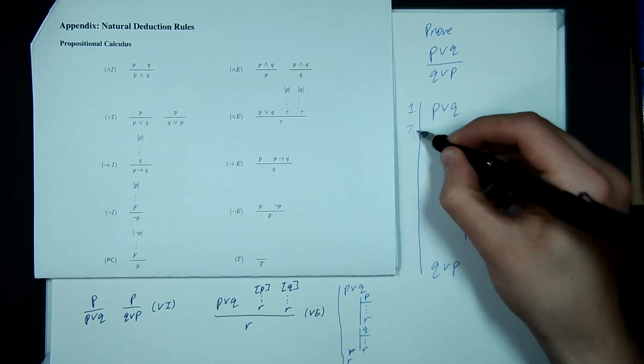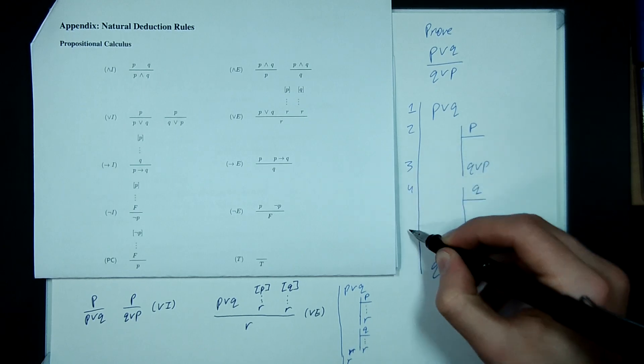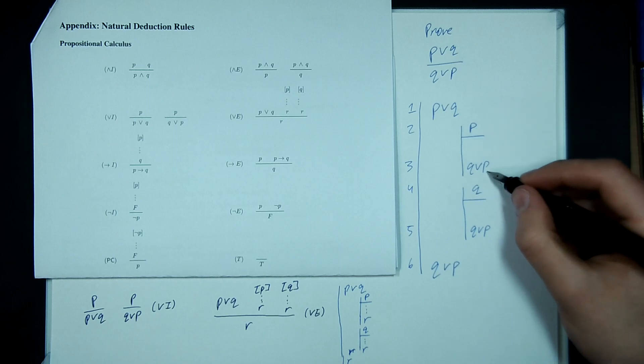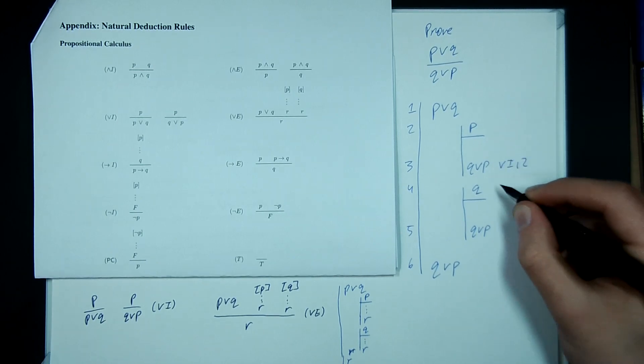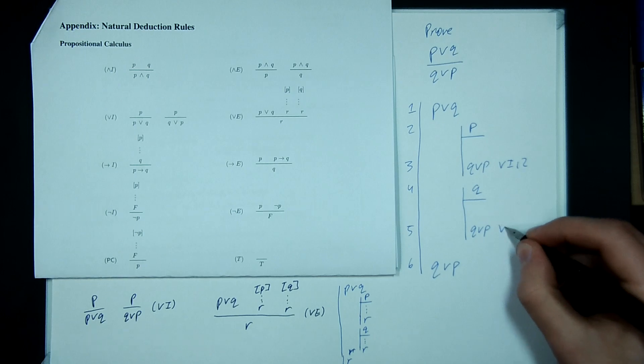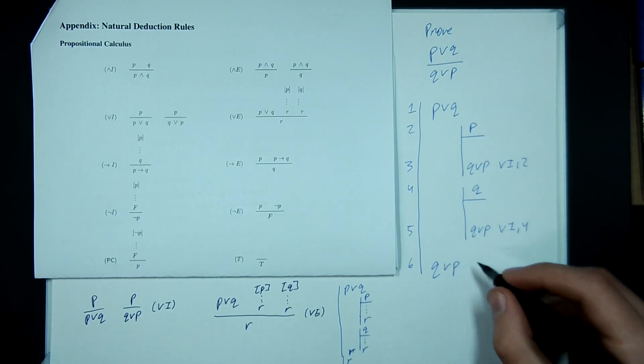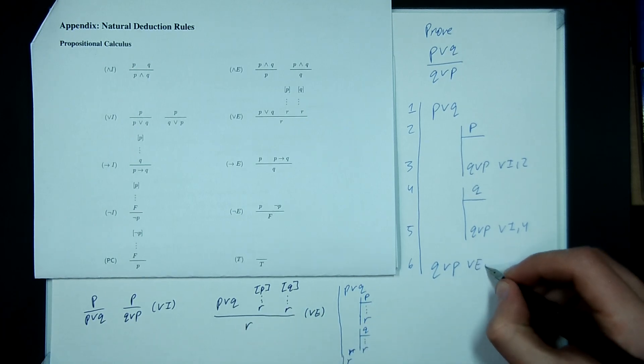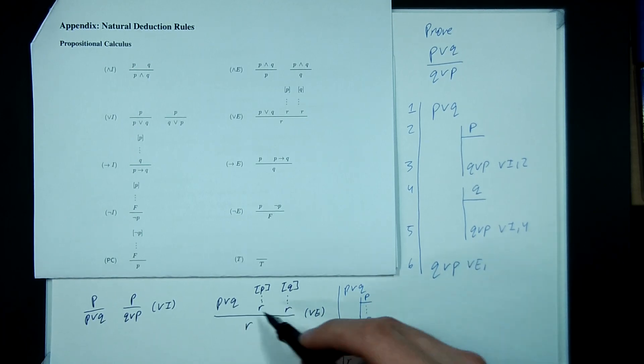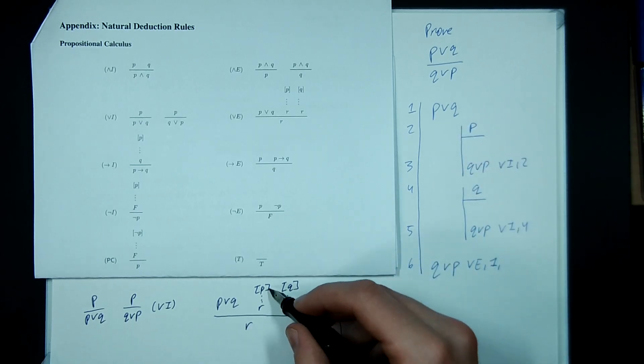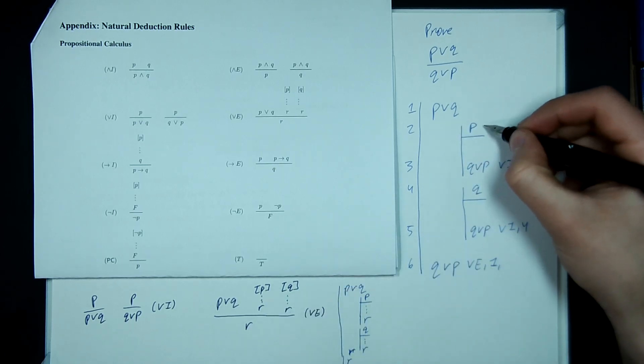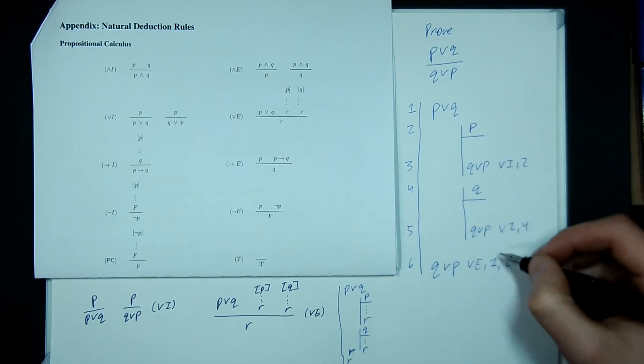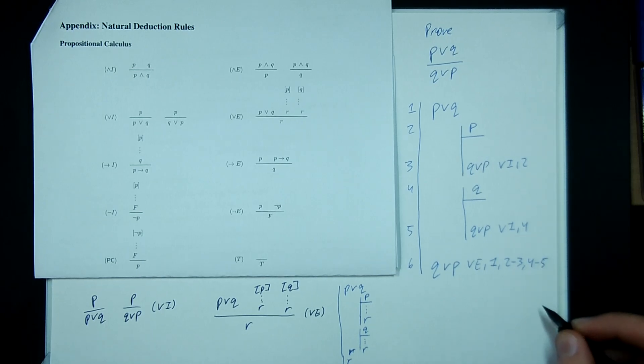So we can fill in our line numbers and fill in our rules. So that's given. This is an assumption. Q or P is by OR introduction, line 2. This is an assumption. OR introduction, line 4. This is by OR elimination. And quoting the rule is a bit tricky because you've got three separate things to quote. So OR elimination. Where was P or Q? Is up here on line 1. Where was the first assumption block? 2 through 3. And where was the second assumption block? 4 through 5. And that's how OR elimination works.